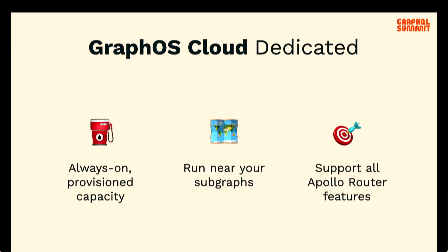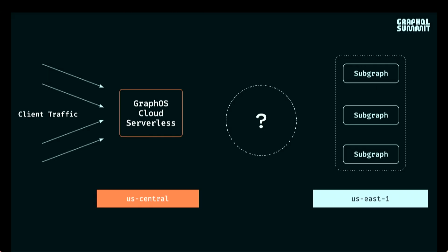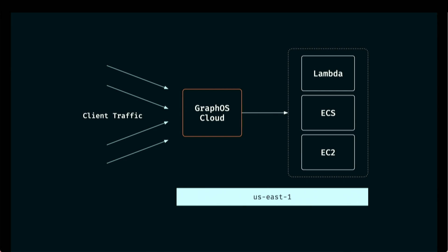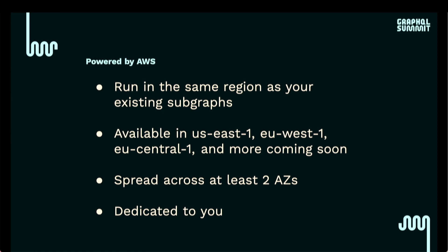That's where GraphOS Cloud Dedicated comes in. It's always-on, provisioned ahead-of-time capacity that runs near your subgraphs and has support for all Apollo Router features. With Dedicated, everything runs in the region of your choice — we're launching with support on AWS, supporting Lambdas, ECS clusters, or EC2 instances. Even the most complex queries can be fast because you control the scale and it runs near your subgraphs. It's available today in US East 1, EU West 1, and EU Central 1, with more regions coming. It's HA by default, running in at least two AZs, and is dedicated and isolated to you.